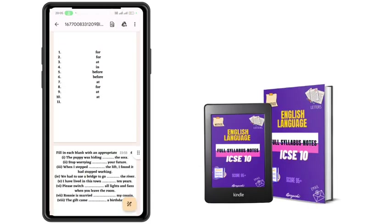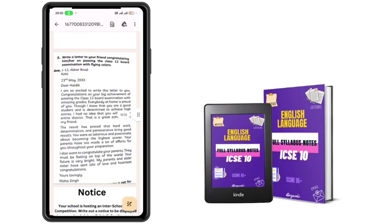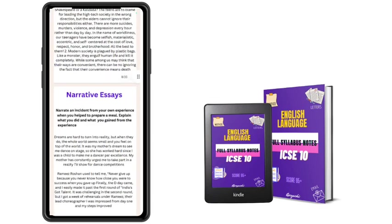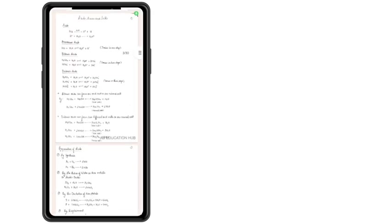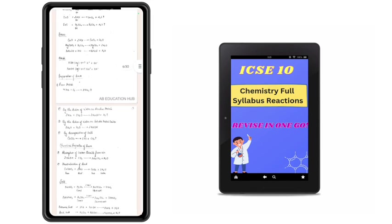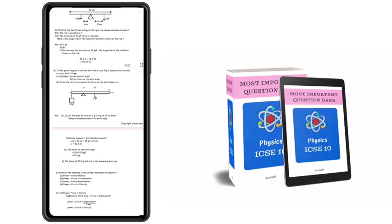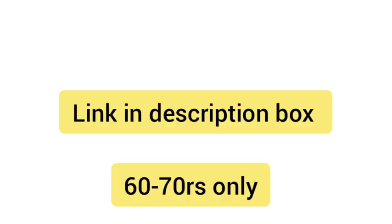Now I would like to introduce you to my ebooks. This is English language full syllabus ebook for ICSE 10th. All the formats be it essay, email, notice, everything has been provided in this ebook. Then we have chemistry full syllabus reactions in which you can revise all the reactions in one go and most important questions of physics. You can buy all these ebooks from the link in the description box.